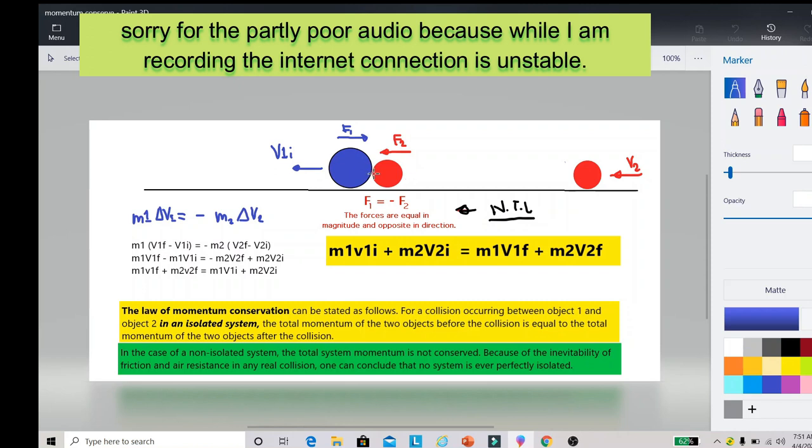Result papasok ngayon dyan yung tinatawag natin na Newton's third law of motion na napag-aralan natin na for every action there will be an equal and opposite reaction. Kapag binangga ni red ball going to the left si blue ball which is also going to the left, ang magiging reaction ni blue ball is a force that is equal in magnitude but opposite in direction that will be going to the right. So in equation form the impulsive force is equal to the negative force 2. The forces are equal in magnitude and opposite in direction.